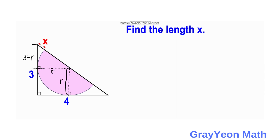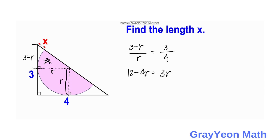Notice that this smaller right triangle is similar to the larger right triangle. Using ratio and proportion, we have (3 minus R) over R is equal to 3 over 4. Then we have 12 minus 4R is equal to 3R, so 12 is equal to 7R. Therefore R is equal to 12 over 7.